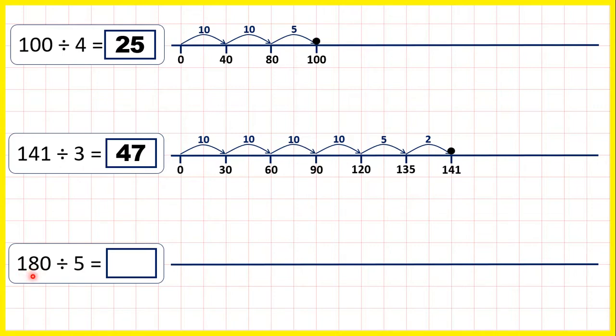Now 180 divided by 5. Again, we can start by jumping in steps of 10 times 5, so in steps of 50. If we add another 10 times 5, 50 plus another 50 is 100. And another 10 lots of 5 takes us to 150.